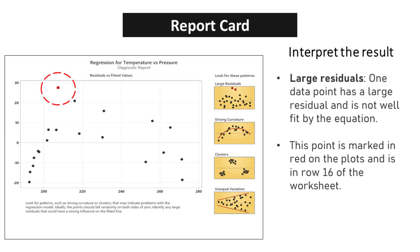While the majority of our data points may conform to the expected pattern and are well fit by the established equations, it is crucial to acknowledge and understand the presence of outliers. One data point has a large residual and is not well fit by the equation. This point is marked in red on the plots and is in row 16 of the worksheet.